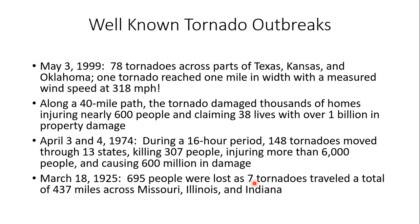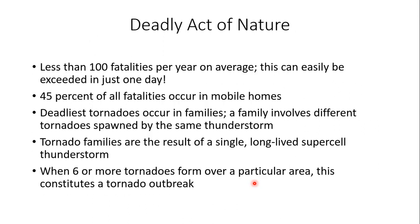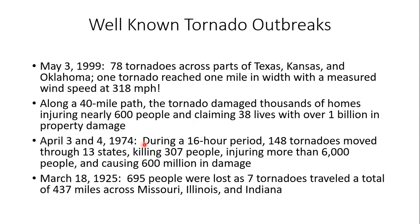Another well-known outbreak occurred April 3rd and 4th, 1974. During a 16-hour period, 148 tornadoes moved through 13 states, killing 307 people — far exceeding the average annual fatality figure in a single day. This outbreak also injured more than 6,000 people and resulted in an astounding 600 million dollars in damage.